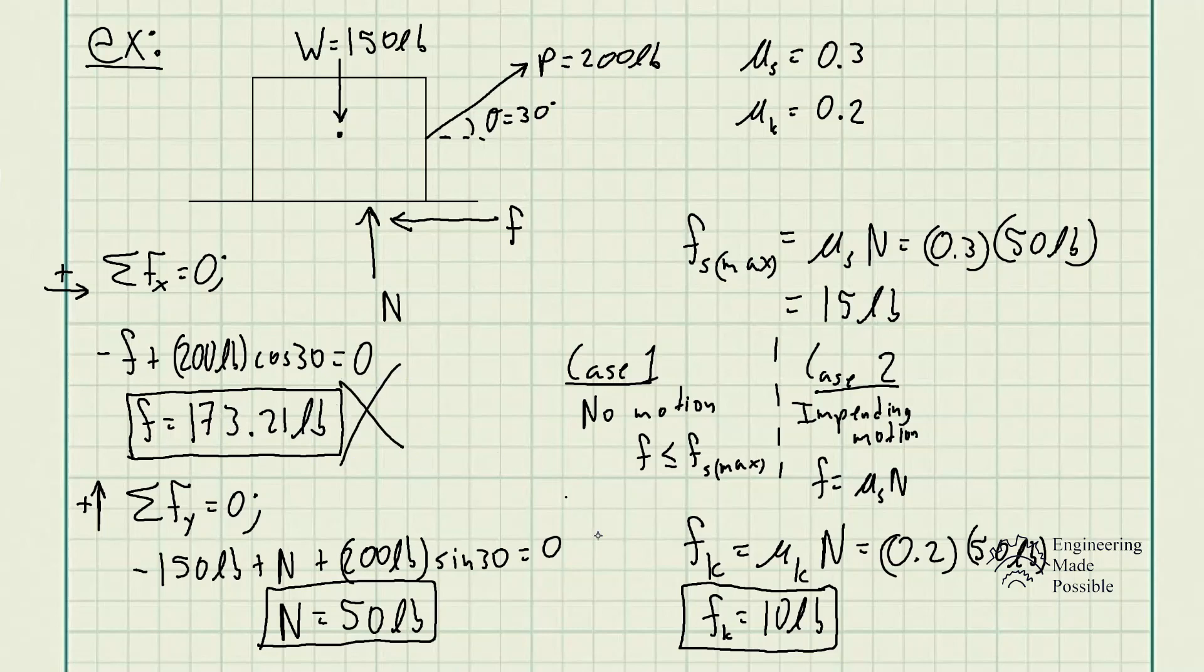The main reason is that since we determined the box is in motion, it's invalid to use static equilibrium equations. The equations set equal to zero assume all forces cancel out because the object is stationary. But in this case, since there is motion, those equations don't apply.